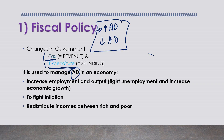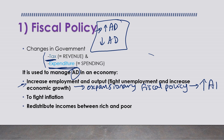If the government wants to increase employment and output - in other words, fight unemployment and increase economic growth - they will use something called an expansionary fiscal policy. At that point they want to increase aggregate demand; they want people in the economy to demand more. So what shall they do with taxes - shall they increase or decrease them?